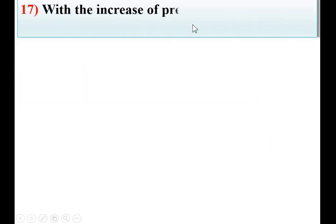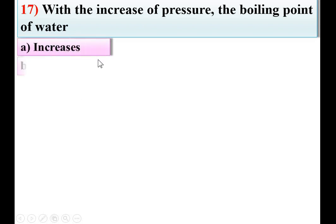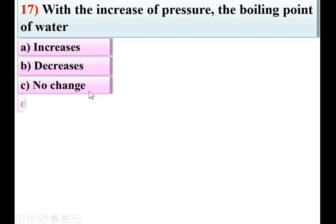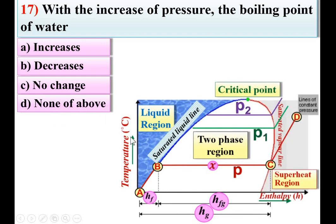Next: with the increase of pressure, the boiling point of water option increases, decreases, no change, or none of the above. Consider this figure — pressure is increasing in this direction: P < P1 < P2. If you increase the pressure, the boiling temperature also increases. A is the right answer.